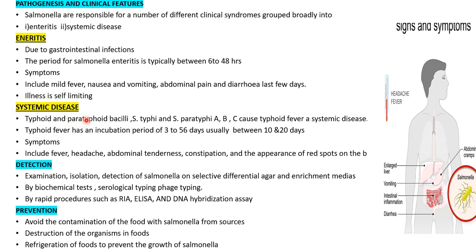For systemic disease, the well-known example is typhoid. Typhoid and paratyphoid are systemic diseases caused by Salmonella typhi and Salmonella paratyphi A and B. These different types of Salmonella typhi are responsible for causing typhoid fever and paratyphoid.